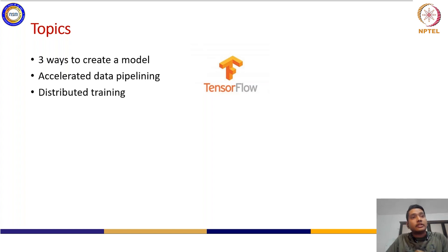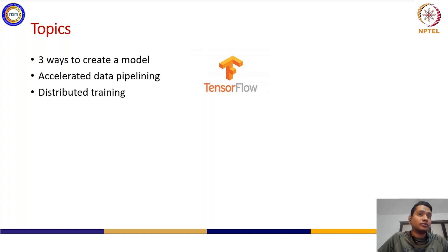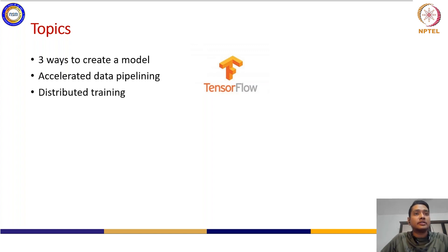We'll look at how you can define the pipeline so that different data bottlenecks from different points of view - processing, opening files, reading files, different pre-processing - are handled. You might also be reading data from remote sources like S3 or a Hadoop cluster. All these ETL pipeline stages - extraction, transformation, and load - we will see how to maintain effectively to accelerate the modules. Then we will talk about distributed training, which is very interesting.